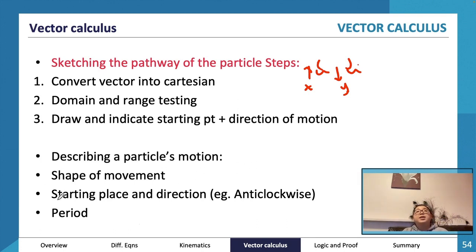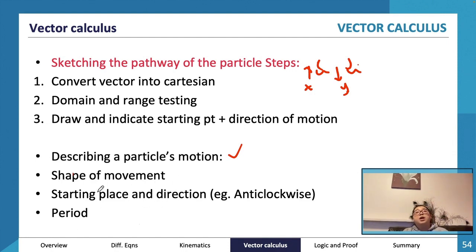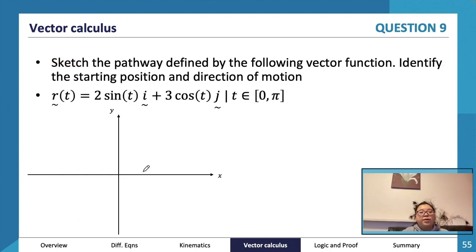The main things they assess you on are: the particle's motion, the shape, the starting position and direction, and also the period - because often it involves circular functions like pi, which makes the period important. If they ask you to graph it, they'll say to state the direction of motion and the starting point.